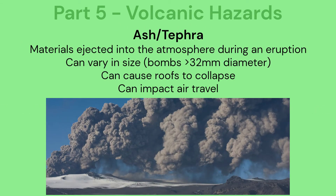Ash or tephra: these are materials ejected into the atmosphere during an eruption. It can vary in size — for example, bombs which are more than 32 millimetres in diameter. It can cause roofs to collapse and can impact air travel.